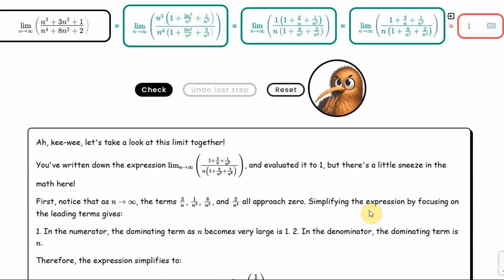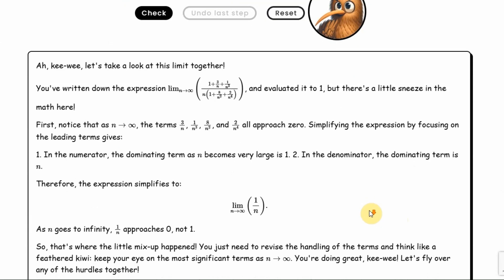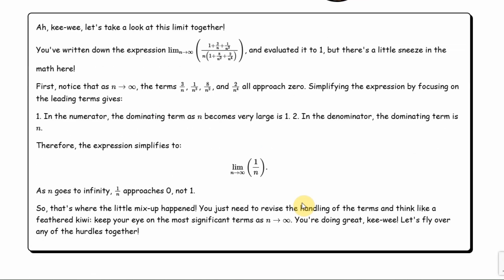And there it is. He's thought about it. Let's read how he suggests that we wrote that it tends to 1, but there's a small mistake, right? Actually, he repeated everything I explained. That all these components tend to zero, so when simplified, it essentially remains 1 over n. And 1 over n also tends to zero, not to 1, right?